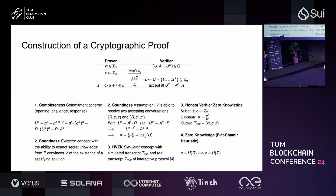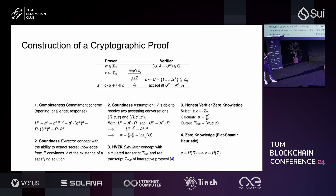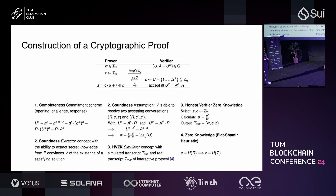The prover knows all these parameters and can compute the function and share z. The value z can be shared because the random value small r blinds what the alpha value actually is. If the prover just shared c times alpha, the verifier could divide z by c and get alpha. So we compute z with added randomness on top — think of it as one-time pad encryption. The verifier then checks that u to the power of z matches the other part of the equation, confirming the prover must have access to alpha.